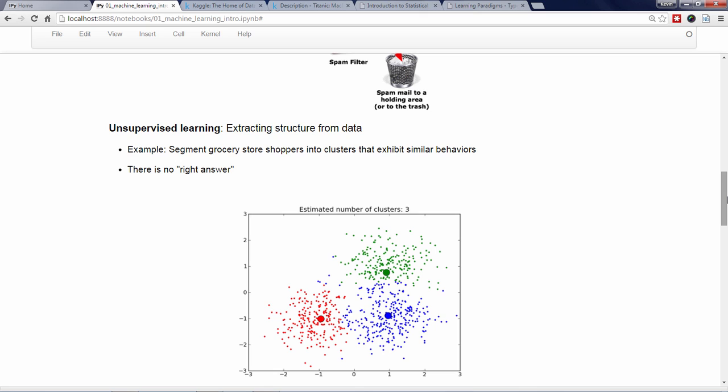This is an unsupervised learning task because there is no right or wrong answer about how many clusters can be found in the data, which people belong in which cluster, or even how to describe each cluster.